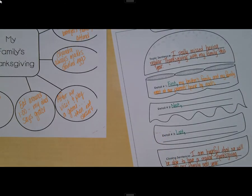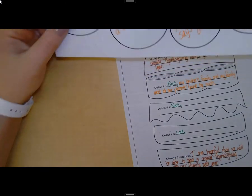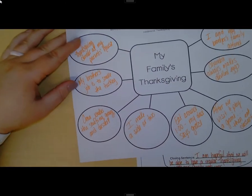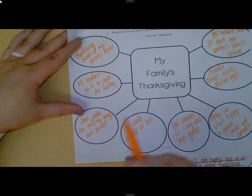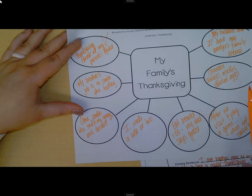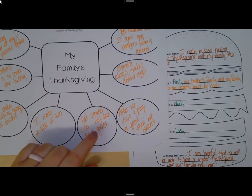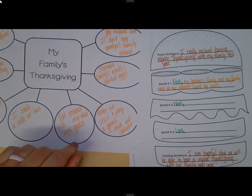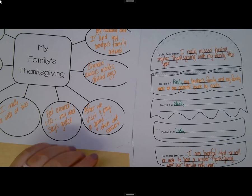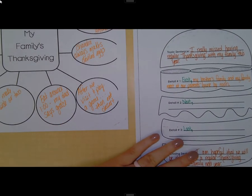Next, let's talk about who makes what. I could talk about my brother smokes the turkey, Chandra makes deviled eggs, my mom makes stuffing, gravy, and dessert, and I make a side. Or, I could say we eat around one o'clock after my dad says grace, and then talk about what we do after. Let's do that one.